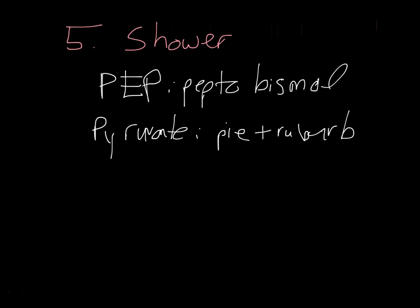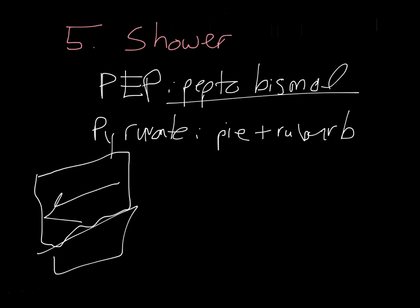And so we can imagine that we're in the shower. And maybe we're starting to feel a little nauseous for whatever reason, and we take some Pepto-Bismol. And then, but it's too late. So we end up throwing up. And we throw up the pie and the rhubarb pie that we just ate onto the floor, despite the best efforts of the Pepto-Bismol. So there we have it. We have the entire glycolysis pathway memorized.